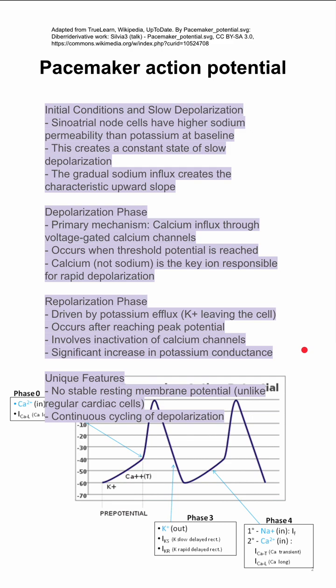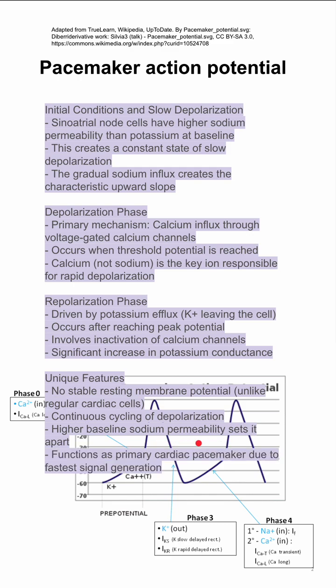Some unique features of the pacemaker cells: there's no stable resting potential, unlike regular cardiac cells and neural cells. There's continuous cycling of depolarization, and it has a higher baseline sodium permeability that sets it apart. It functions as a primary cardiac pacemaker if it has the fastest signal generation.